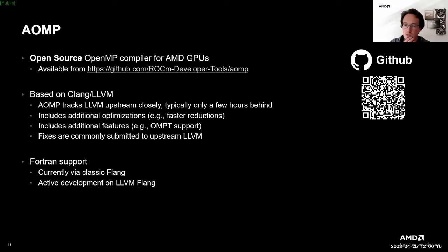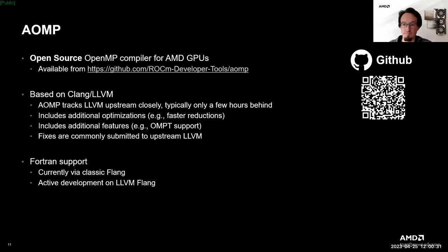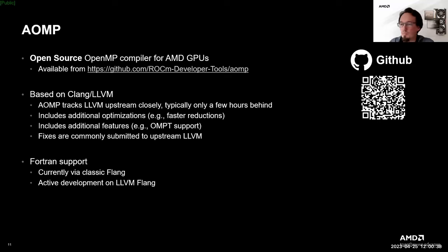Downstream functionality added in AOMP includes both optimizations and additional features. One of the most important additions for our users is much faster reductions compared to upstream LLVM. An additional feature is OMPT — the OpenMP tools interface functionality for device-side callbacks and tracing — which is available in AOMP but not yet in upstream.